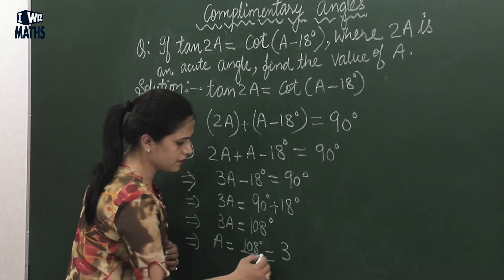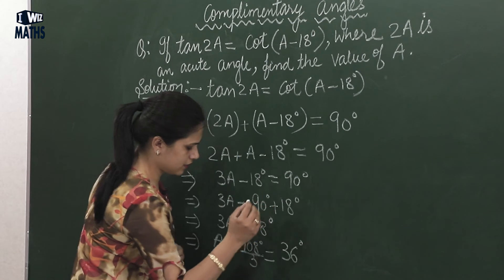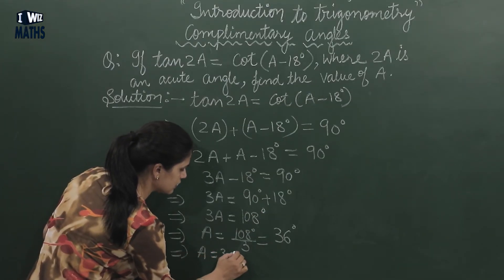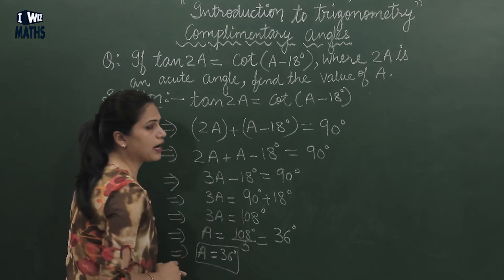That means how much? 3, 3s are 9, and 3, 6s are 18. So here the value of A we've obtained is 36°. Let's highlight this.